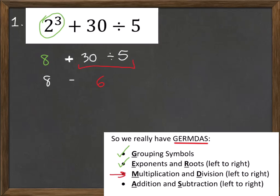So now I have eight plus six. That's multiplication and division taken care of. Last but not least, we have addition and subtraction — that's the only thing we have left. Eight plus six is 14. So my final answer is 14.